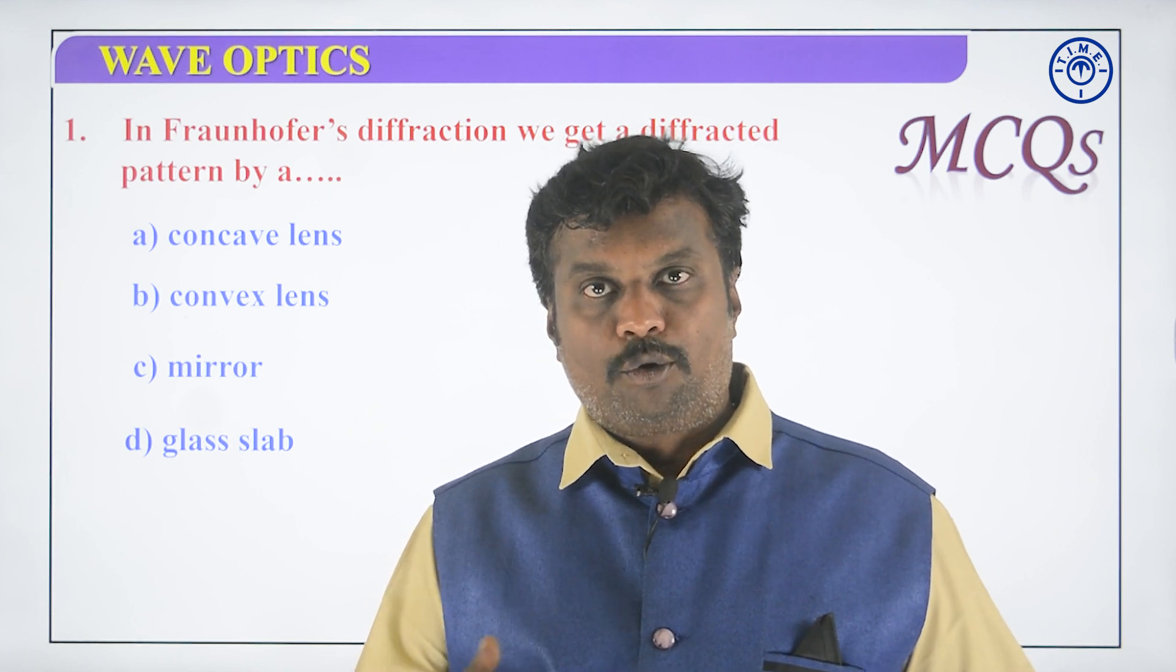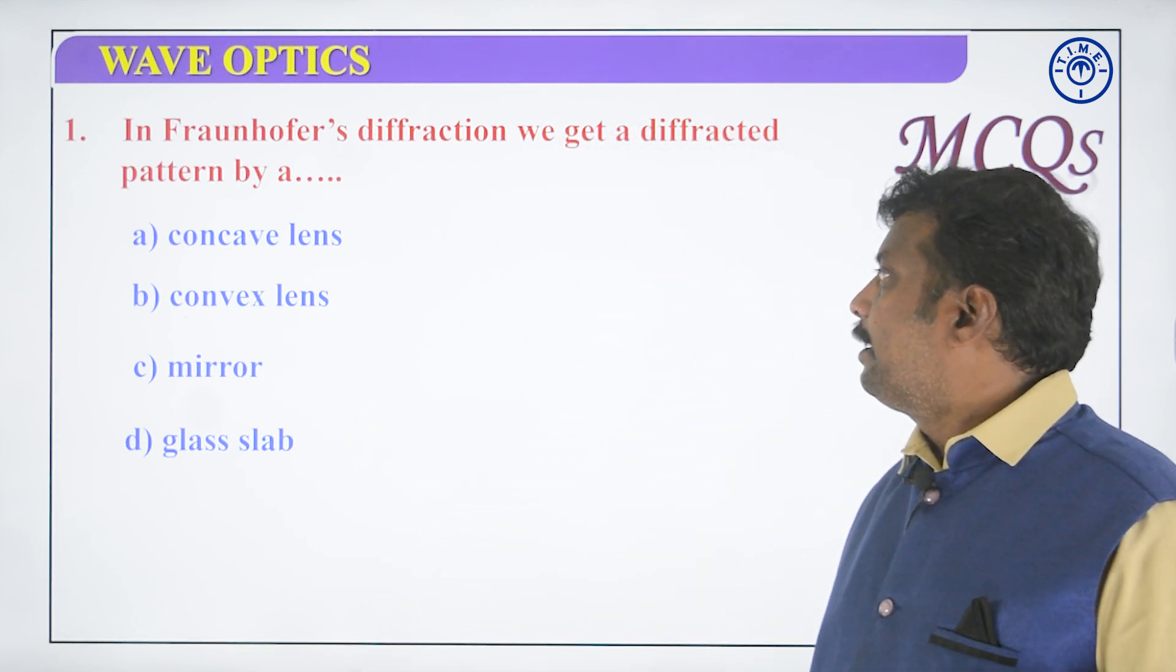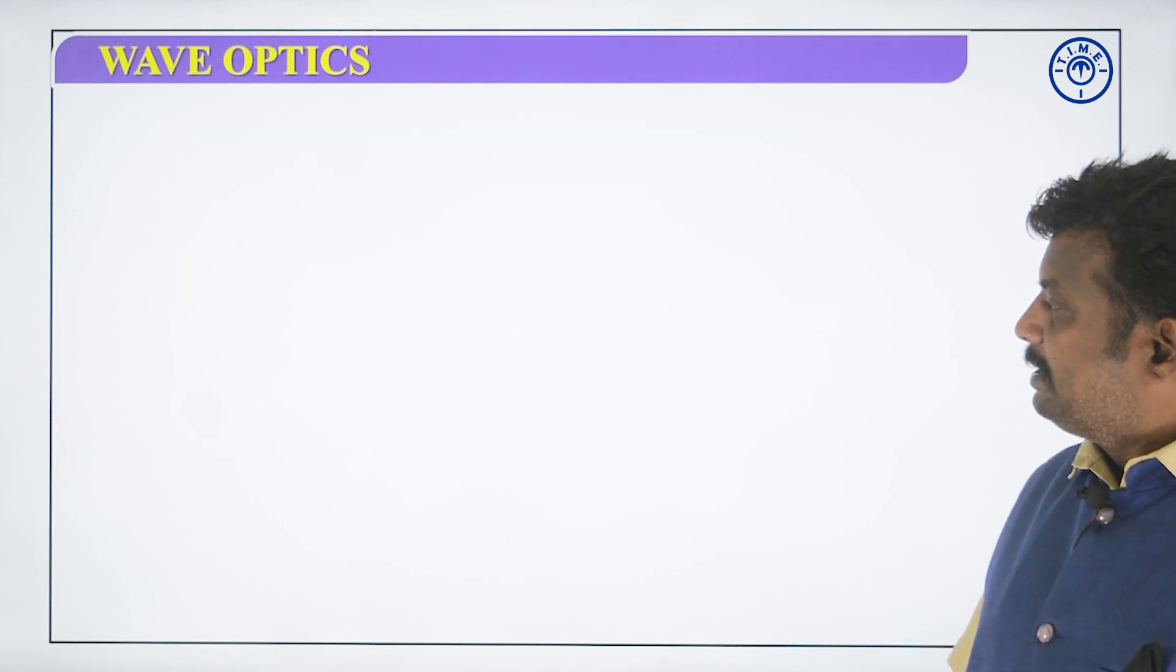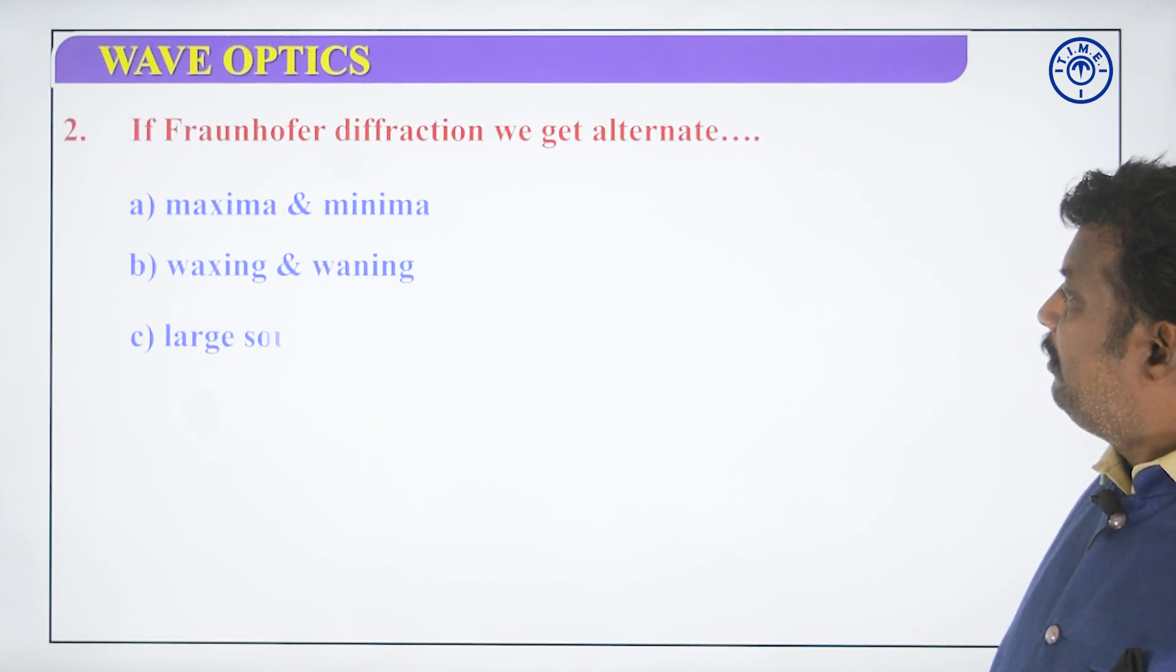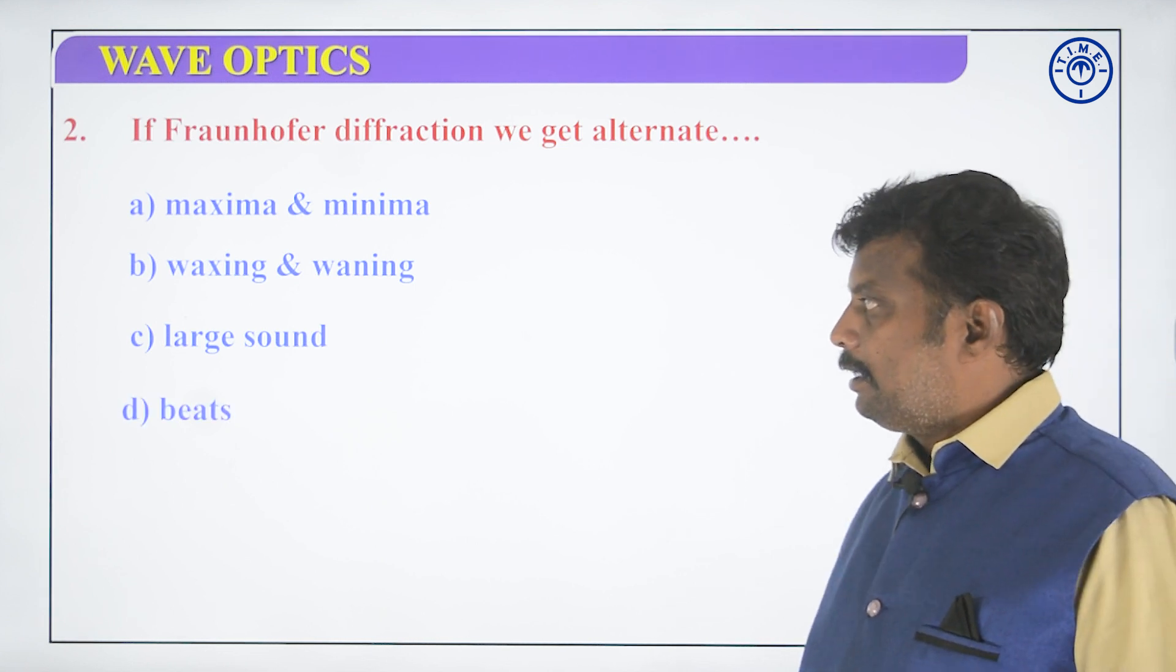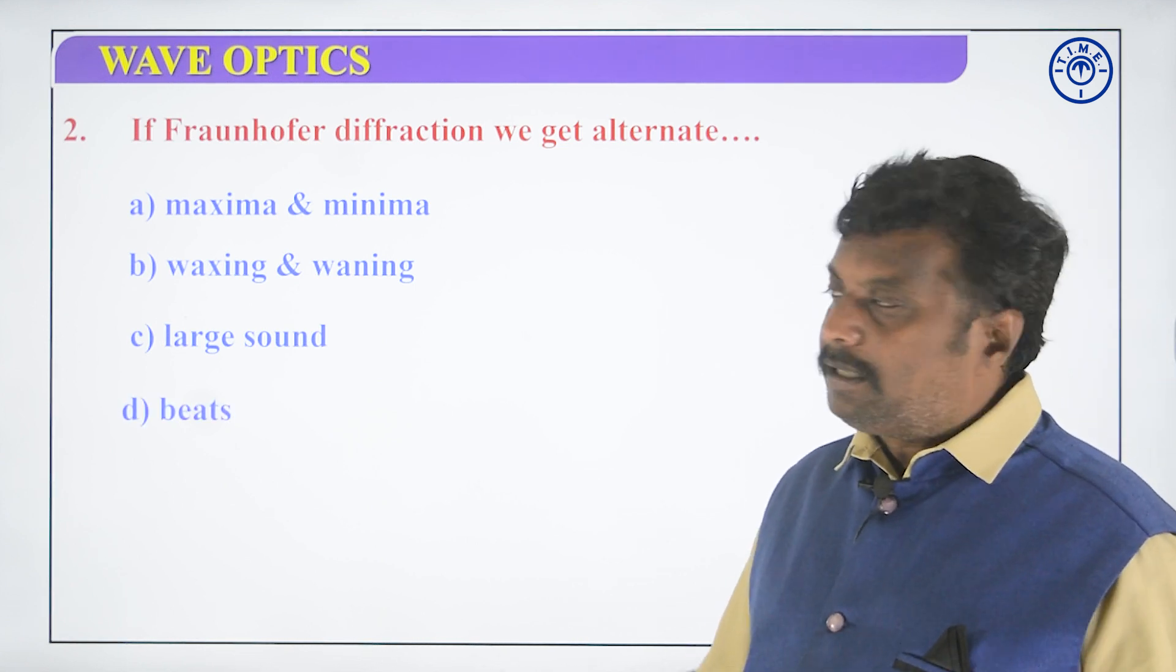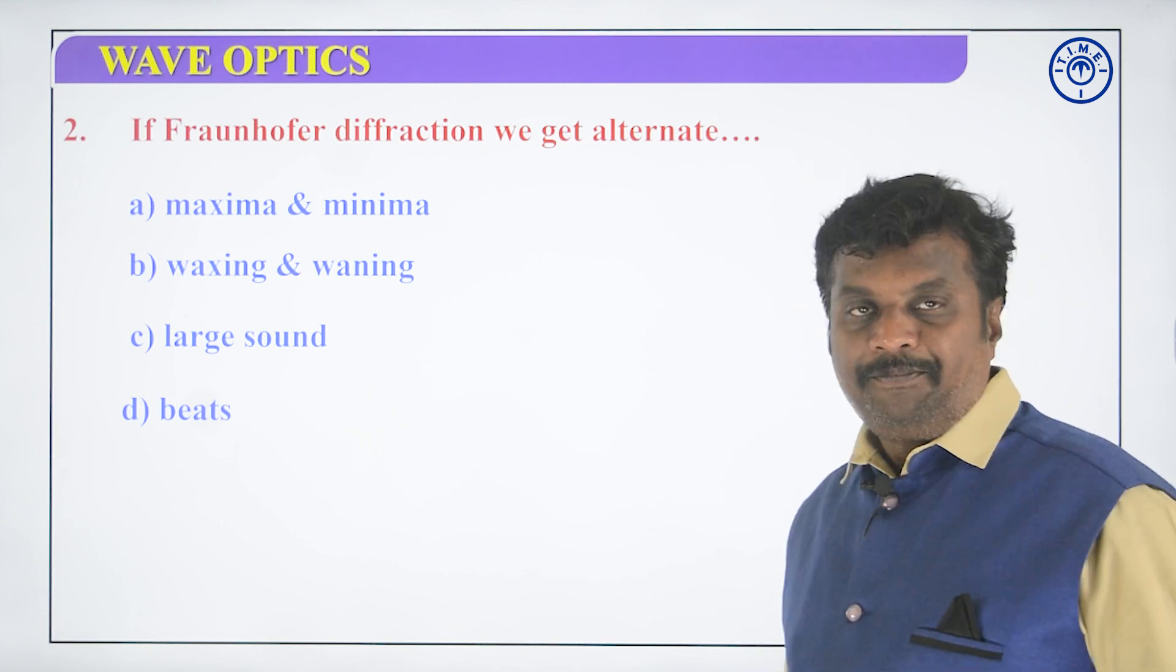So this is a convex lens, as you all know. And second thing, in Fraunhofer diffraction we get alternate maxima and minima, waxing and waning beats update, okay. So be clear with your choices, okay.